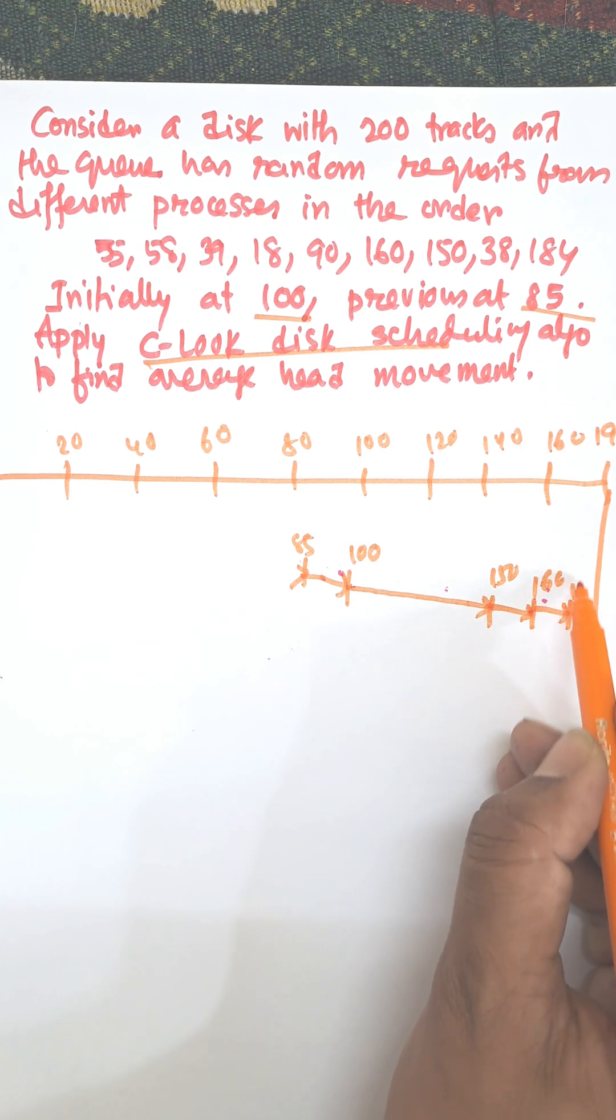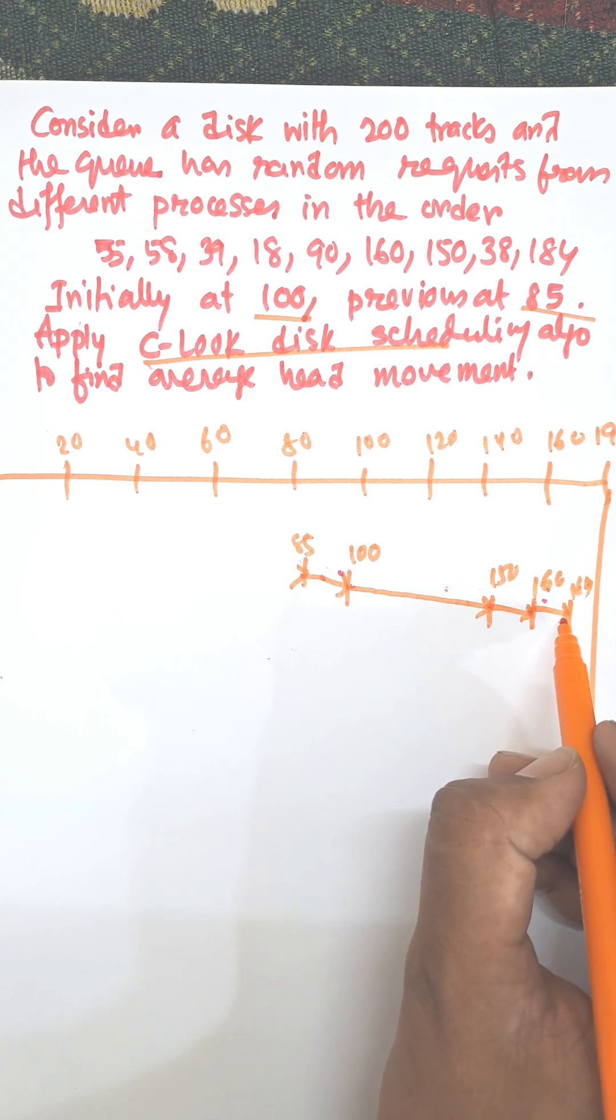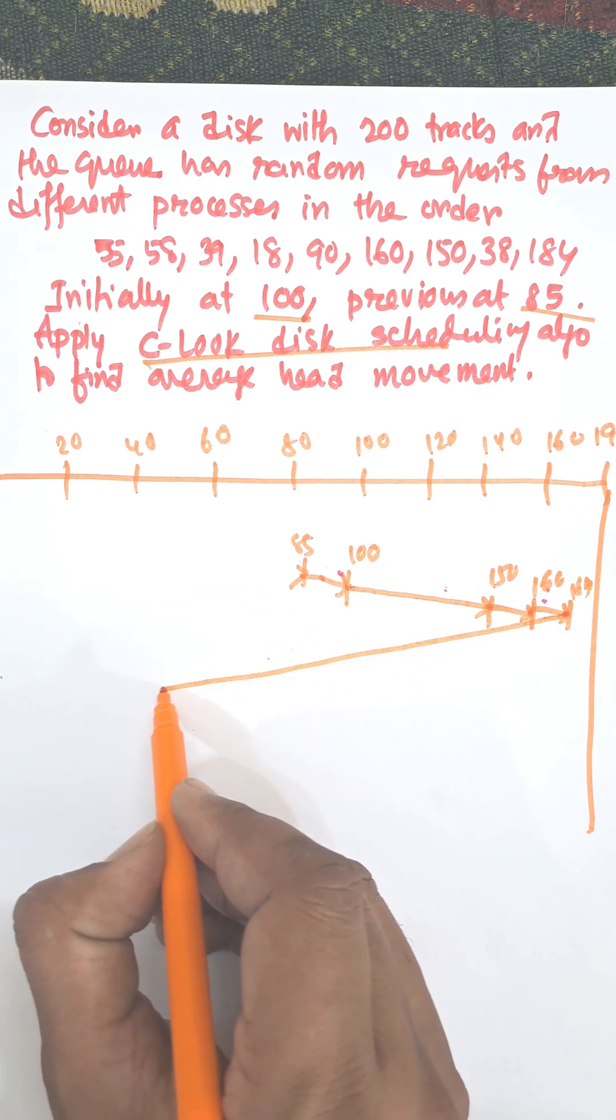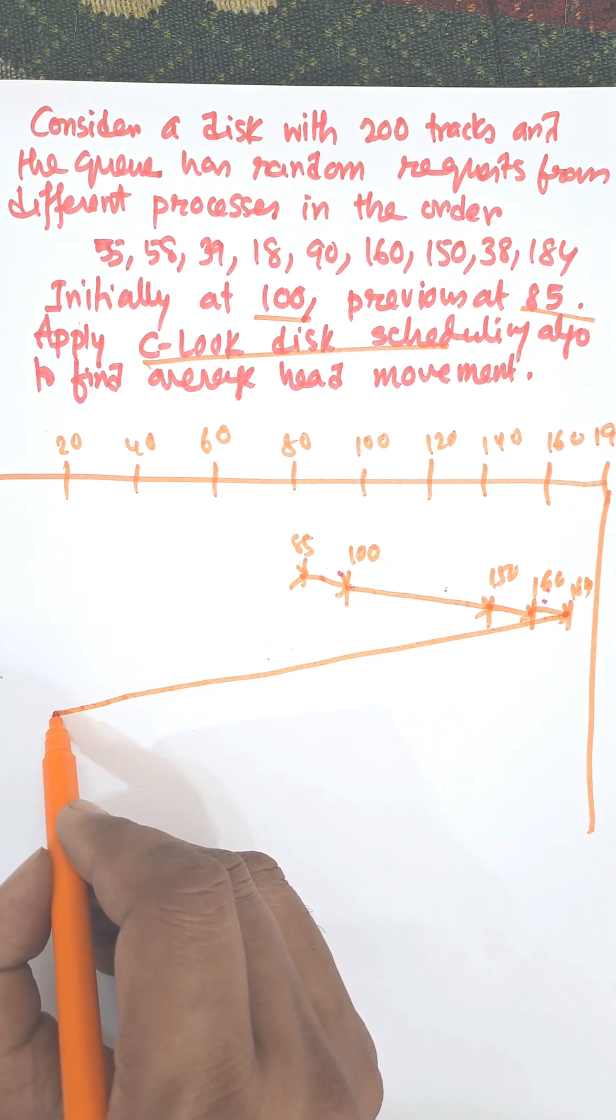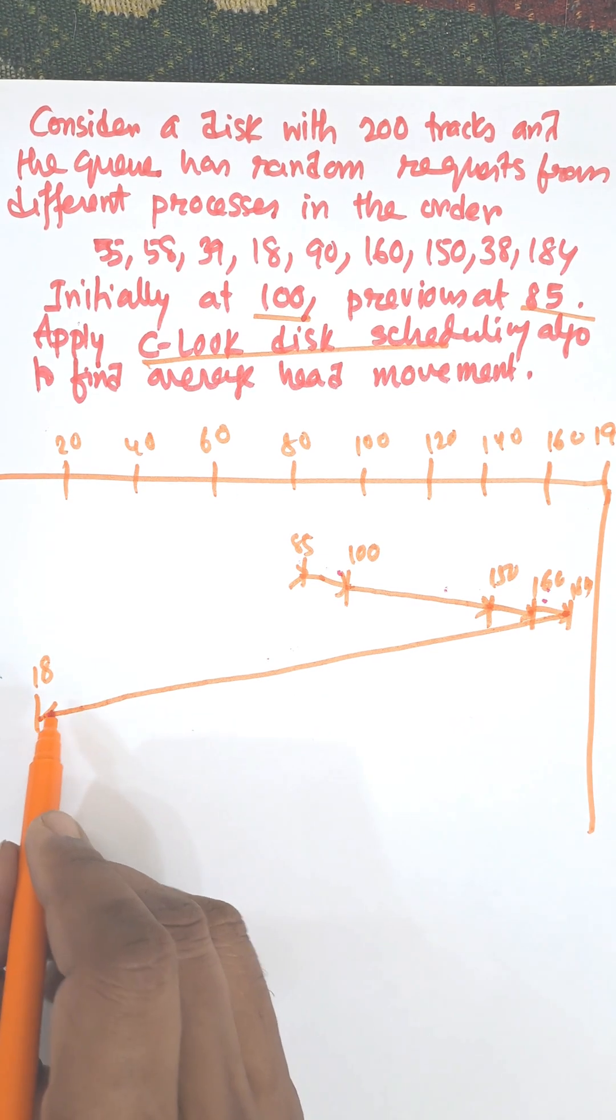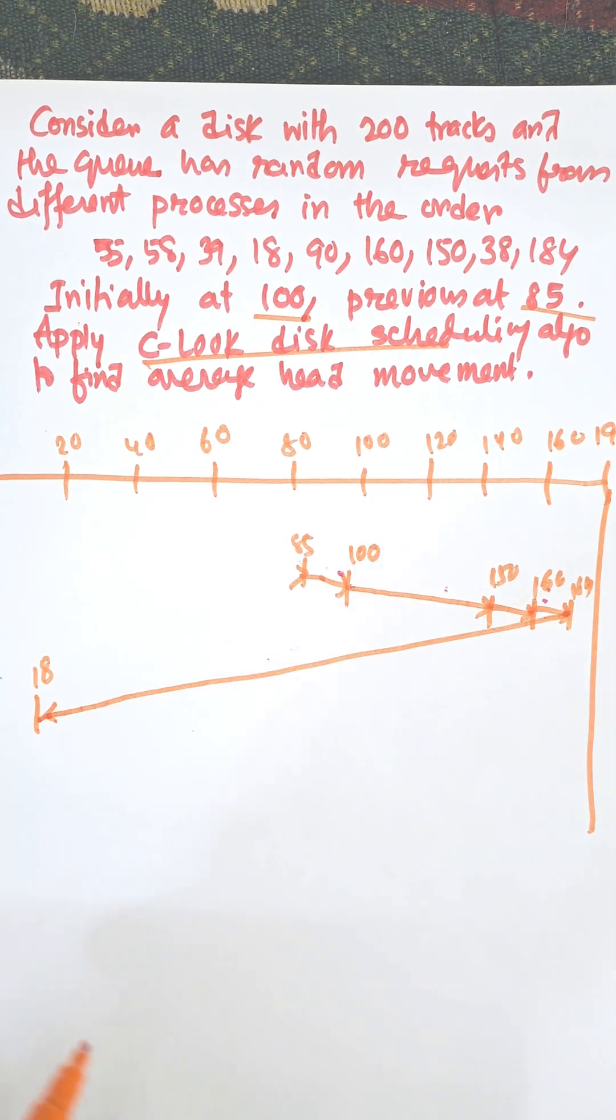Then 184. Then it will move to the lowest number, that is 18, and then move to the forward direction. That is what is circular look.